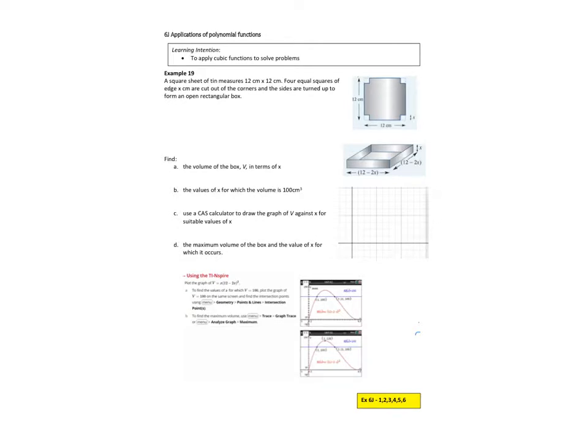Read the question through carefully and identify the key terms. So we've got a square tin of paper, there's the dimensions of my paper, 12 by 12. Four equal squares of edge X are cut out of the corners and the sides are turned up to form a rectangular box. So we can see our box here, we've even highlighted the dimensions there.